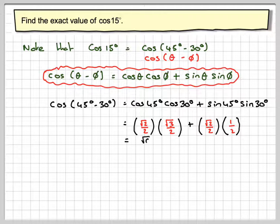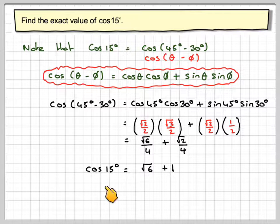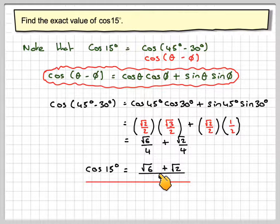√2 times √3 is √6. 2 times 2 is 4, plus √2/4, because √2 times 1 is √2, 2 times 2 is 4. And that gives me that cos 15° is (√6 + √2)/4.